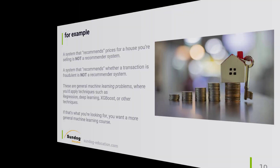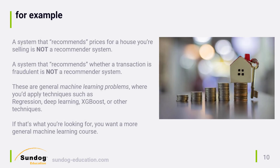For example, if you're looking for a system that recommends prices for a house based on how big it is, the neighbors, and all that — that's not a recommender system, that's a machine learning system. If you want a system that recommends whether a transaction is fraudulent, again, that's not a recommender system — that's just a machine learning problem more generally.